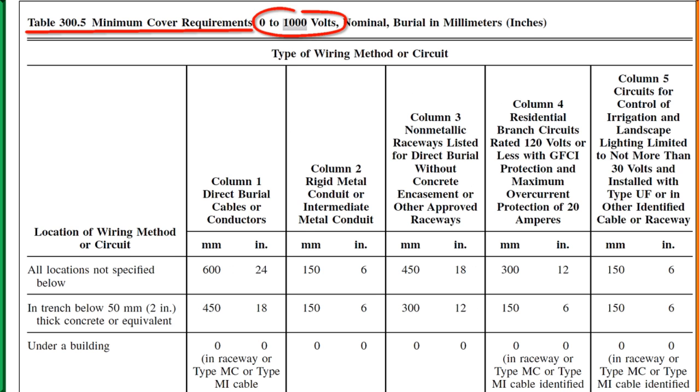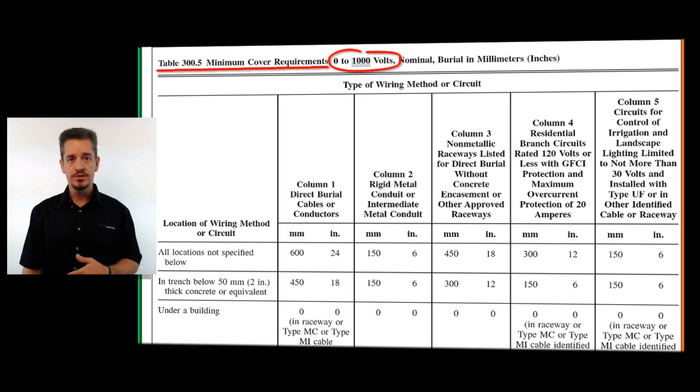Guess what else? This includes conductors, cables, raceways, things that are zero to a thousand volts. Zero to a thousand volts. What does that tell you? Spare raceways that have nothing in them. Low voltage guys, this applies to you most of the time.